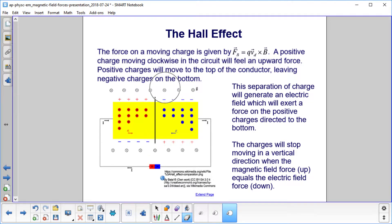What does this separation of charge do? It generates an electric field which will exert a force on these positive charges to direct them to the bottom. The magnetic field pushes them up here, but once I have that plus up here and minus here, I now have an electric field in this direction.